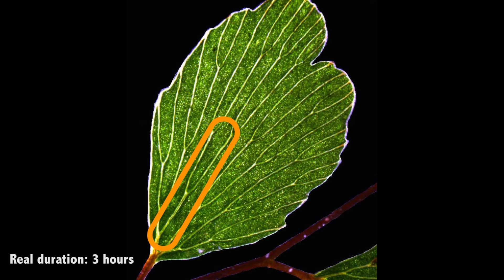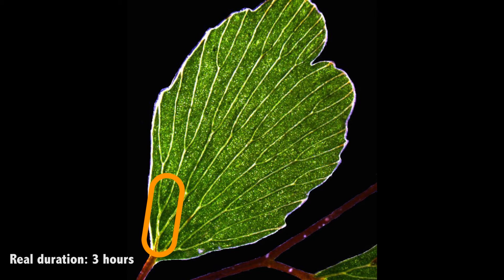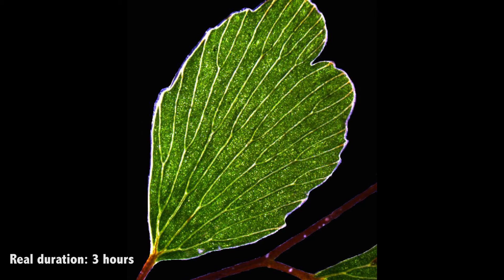Under severe drought, the leaf shrinks a little and suddenly bubbles appear in the veins, starting embolisms.